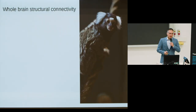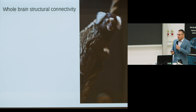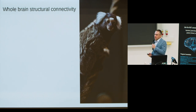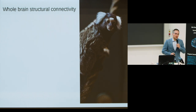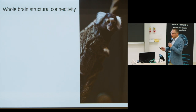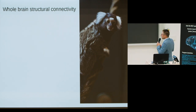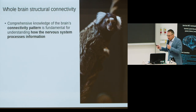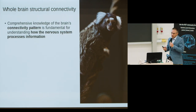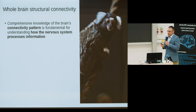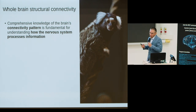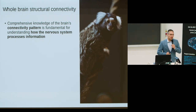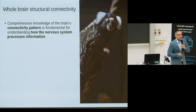In the two previous presentations, we learned how we can investigate various kinds of connectivity in humans as well as non-human primates and rodents. Let me quickly recapitulate the main points. In essence, it is important to study the comprehensive wiring diagram of the brain because it is critical and fundamental for understanding how the brain processes information.